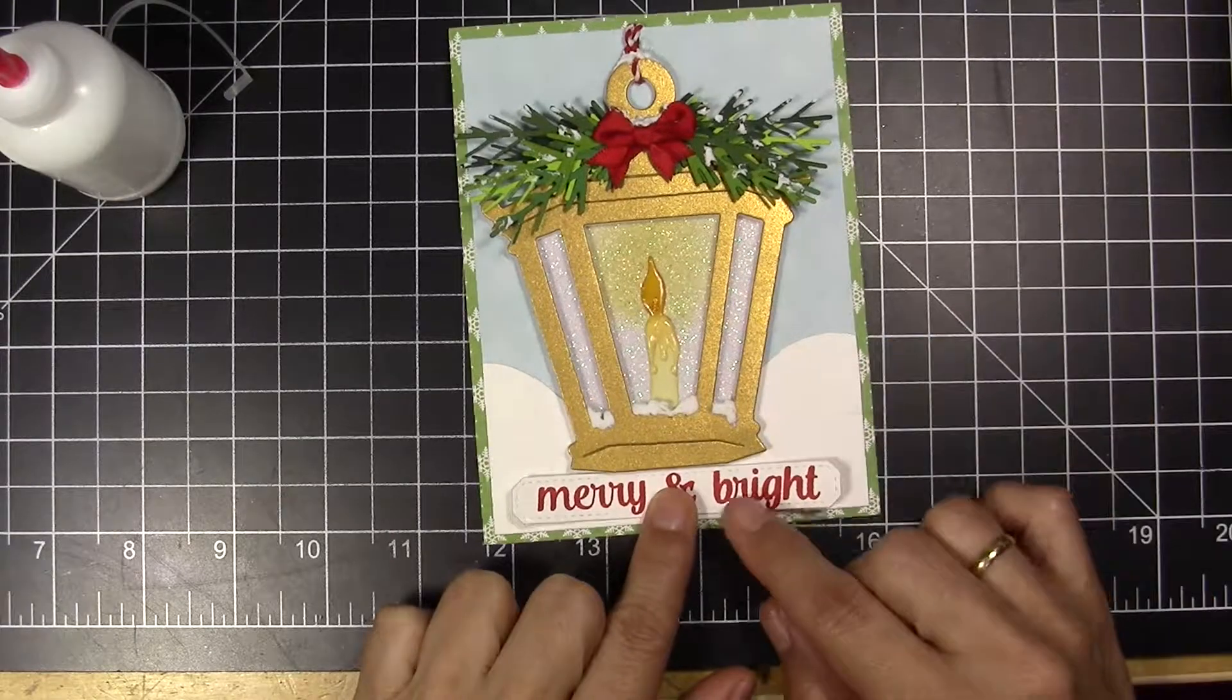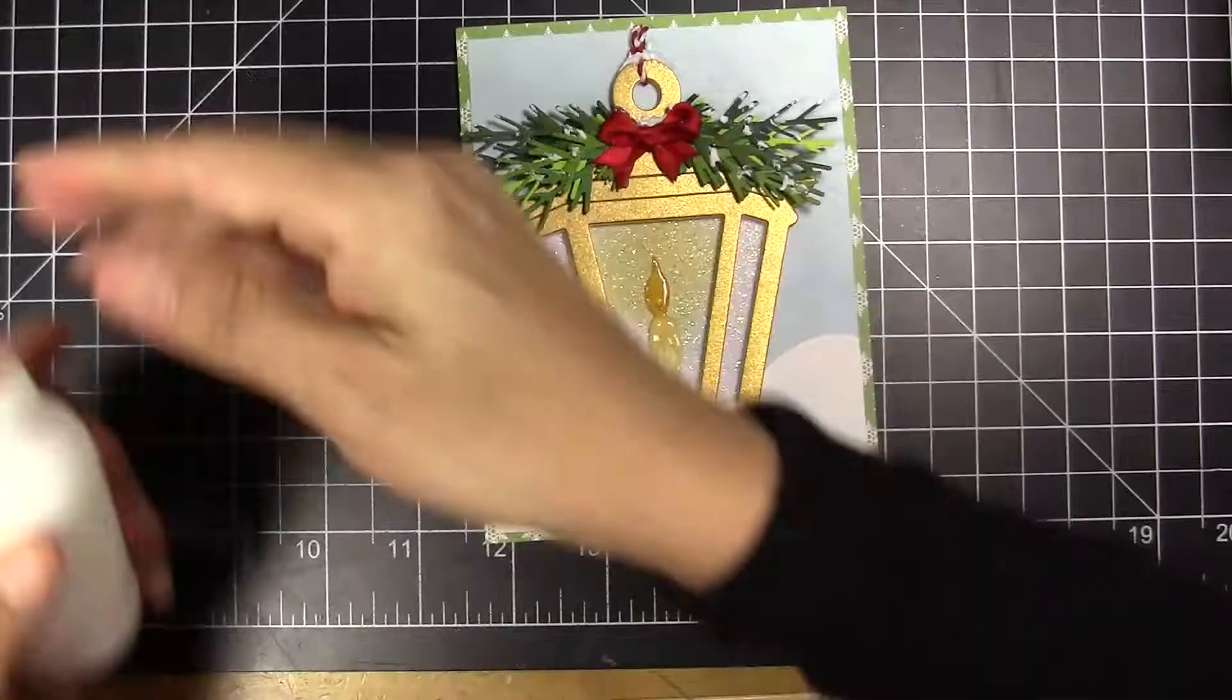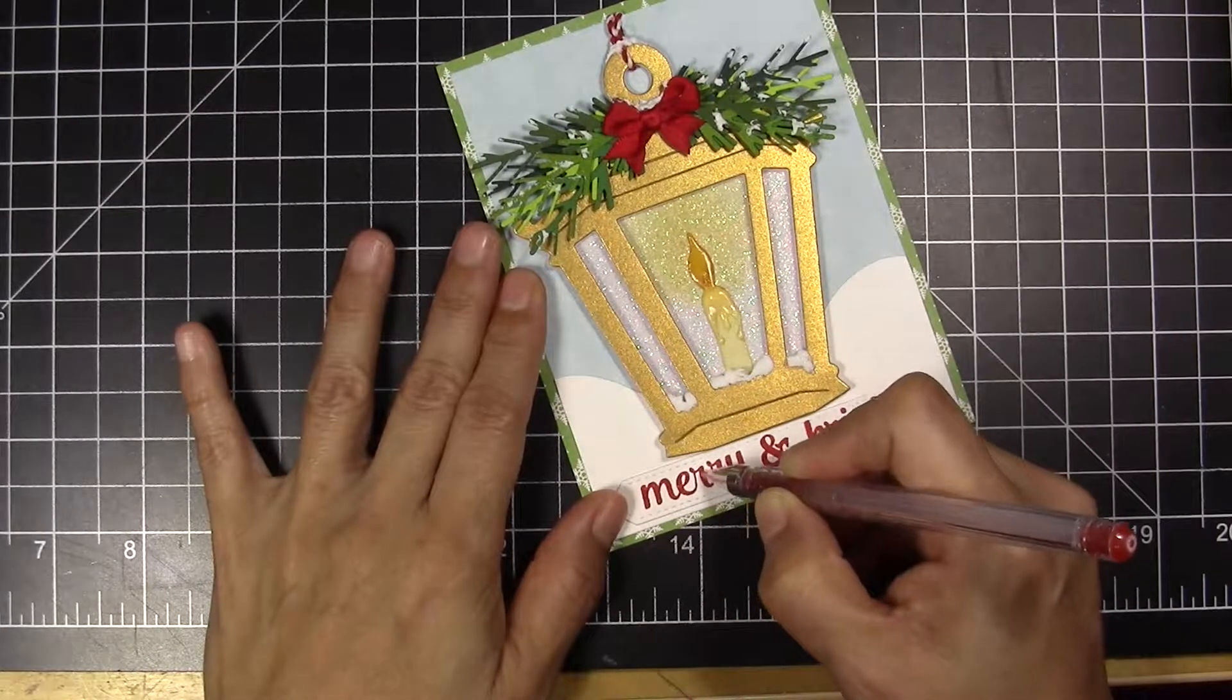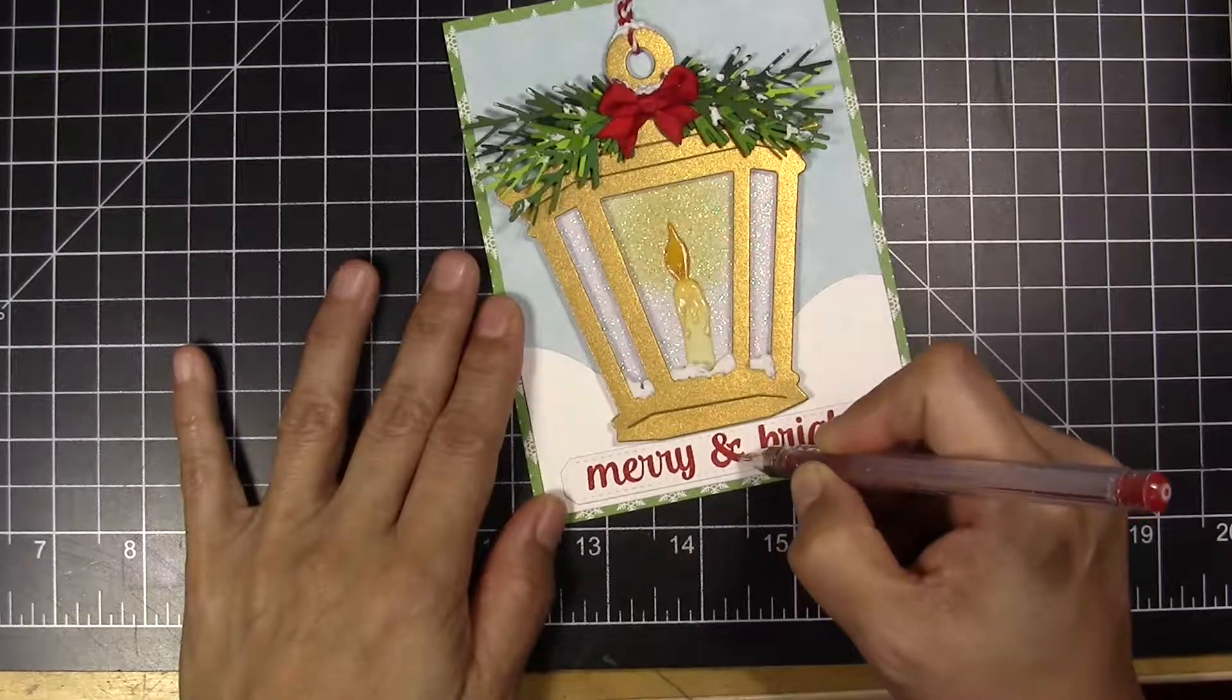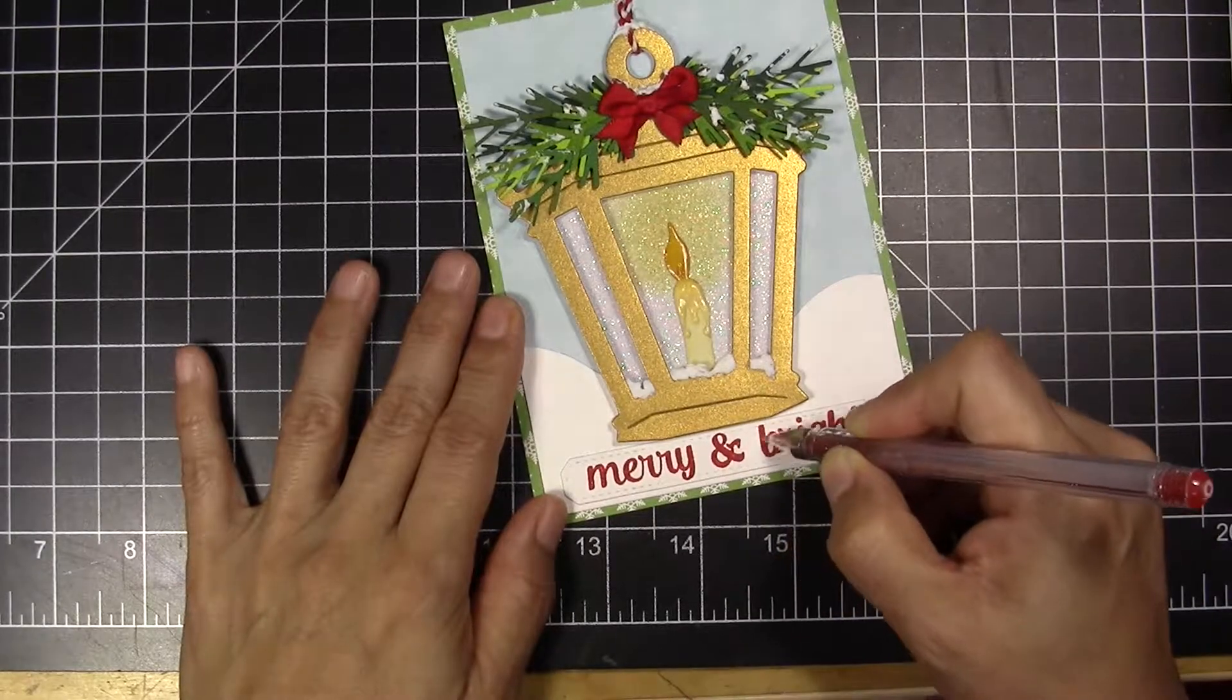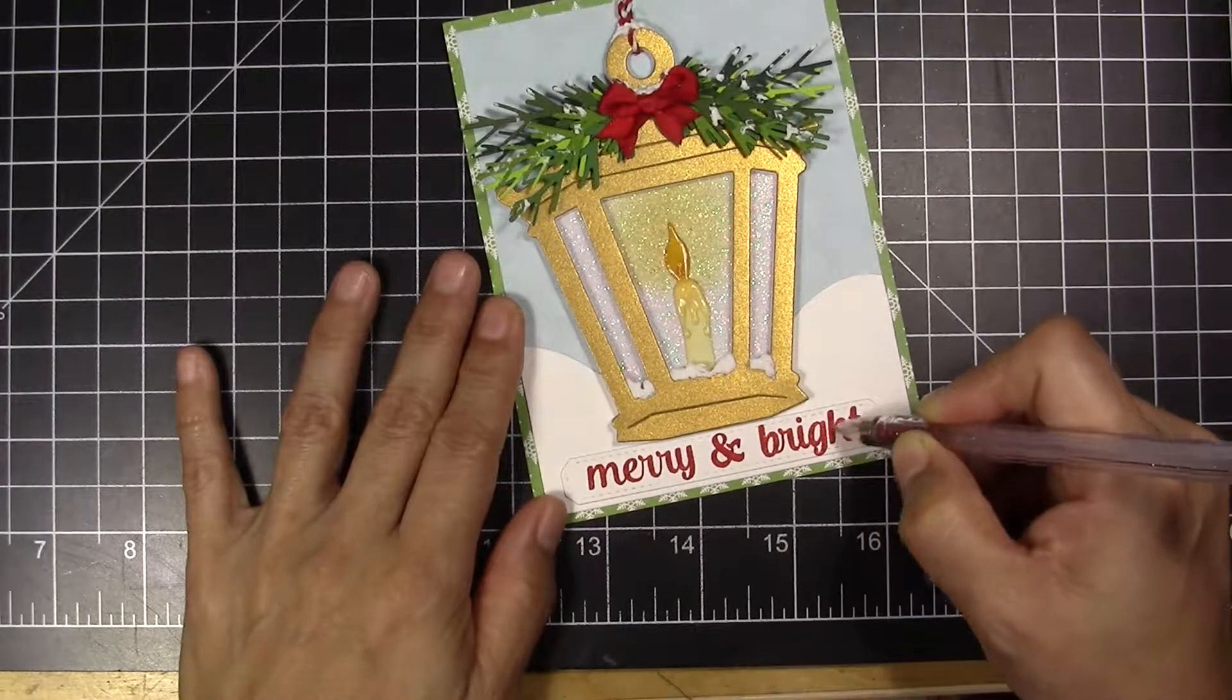I was stamping this out of camera—I'm sorry, I didn't figure that out—but I stamped 'Merry and Bright' in red, and I added a little bit of sparkling with the glitter gel pen.